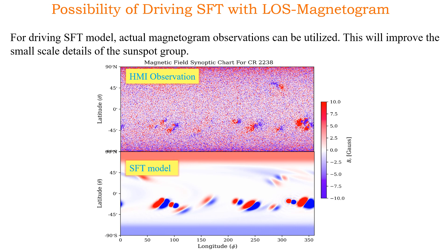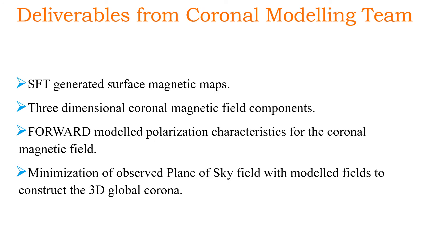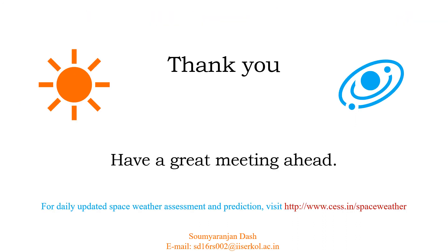Here is a comparison between the HMI observation of a synoptic chart and the SFT map for the same date — Carrington rotation 2238 — where we can see the large-scale magnetic field structures are apparent in the SFT model but the small-scale details are in the HMI observations. Using such maps in the extrapolation will better predict the coronal magnetic field structure. The deliverables from the coronal modeling team include: SFT-generated surface magnetic field maps, three-dimensional coronal magnetic field components, forward-model polarization characteristics for the global coronal magnetic field, and minimization of observed plane-of-sky field with model fields to construct a realistic 3D global corona for daily updated space weather assessment and predictions.